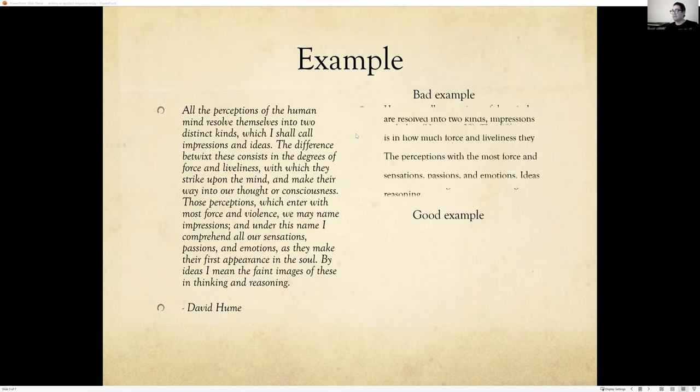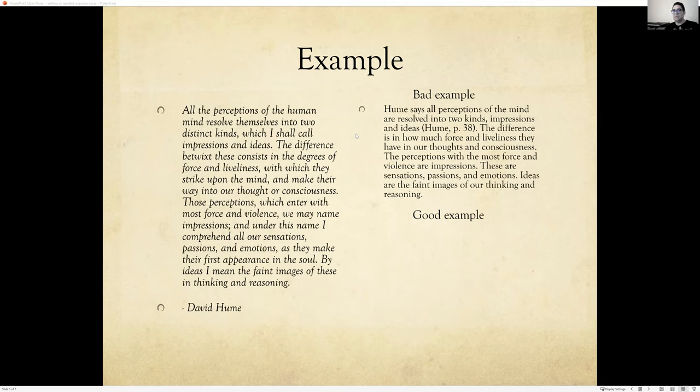Well, let's look at a bad example. This is what I was saying right now. You don't want to simply copy and paste a lot of it or just take out some sentences but leave the rest. Because if we say, well, Hume says all perceptions and mind are resolved into two kinds, impressions and ideas. The difference between how much force and liveliness they have in our thoughts and consciousness. The perception with the most force and violence are impressions. And these are sensations, passions, and emotions. Ideas are the faint images of our thinking and reasoning. See if it's confusing in the first quote. And this bad example, well, you're still confused, right? Because they're essentially saying the same exact thing.